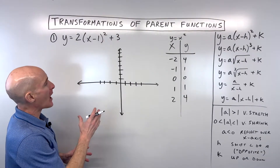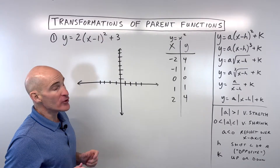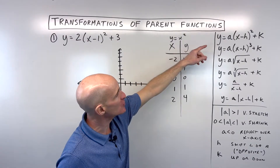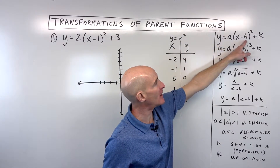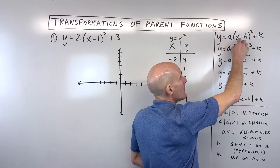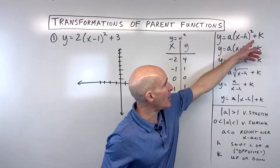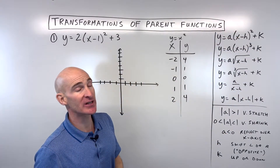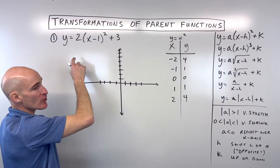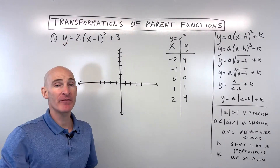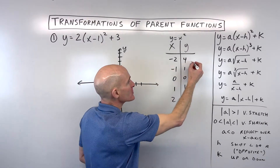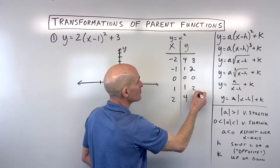When doing the order of transformations in this form, work from left to right: vertical stretch or shrink first, then shift left or right, then shift up or down — always do the K (vertical shift) last. The 2 is greater than 1, so it's a vertical stretch by a factor of 2. Multiply all y coordinates by 2, giving 8, 2, 0, 2, 8.